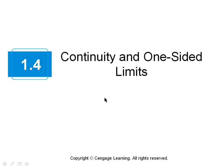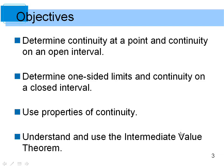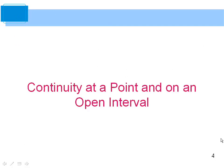Our next section is 1.4 from the textbook on continuity and one-sided limits. Here are some objectives: determine continuity at a point and continuity on an open interval, determine one-sided limits and continuity on a closed interval, use properties of continuity, and understand and use the Intermediate Value Theorem.